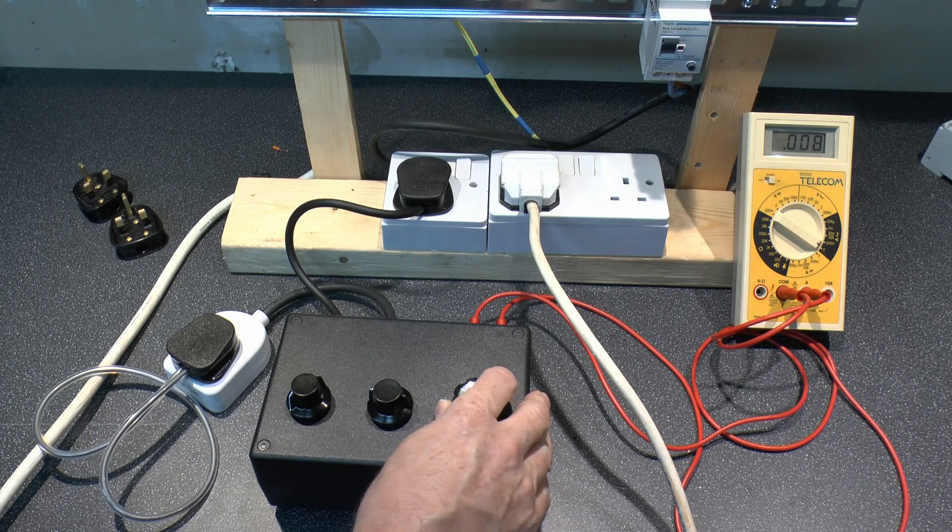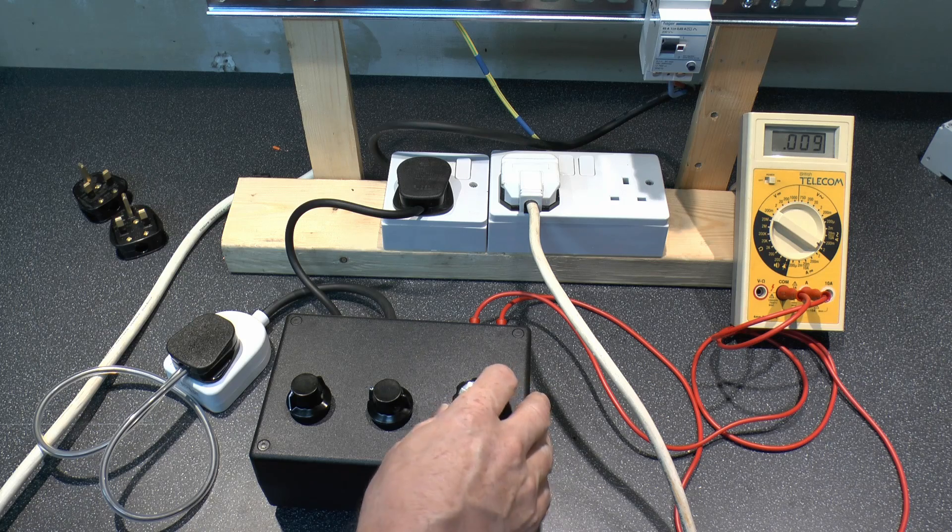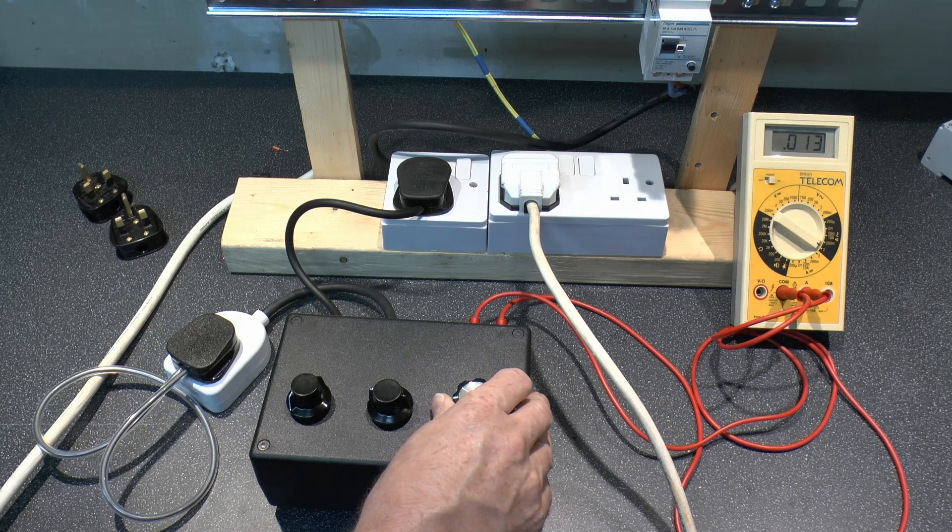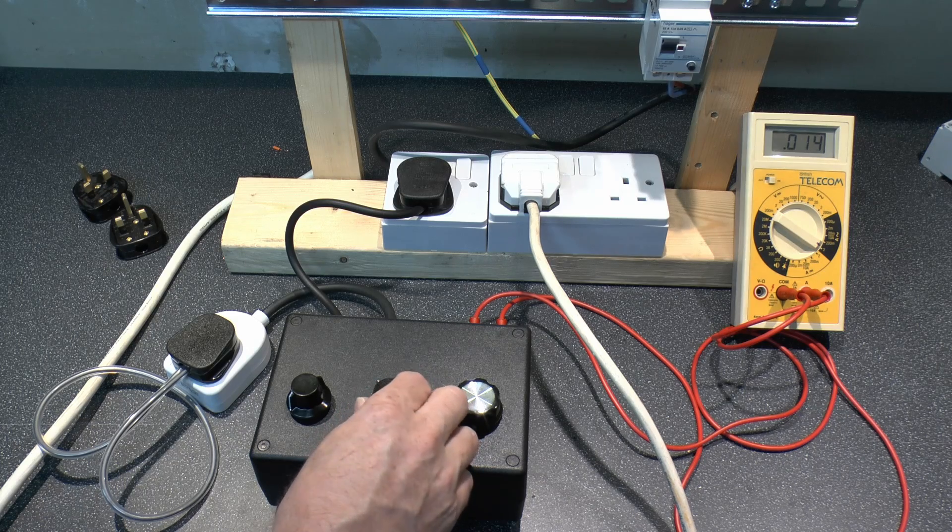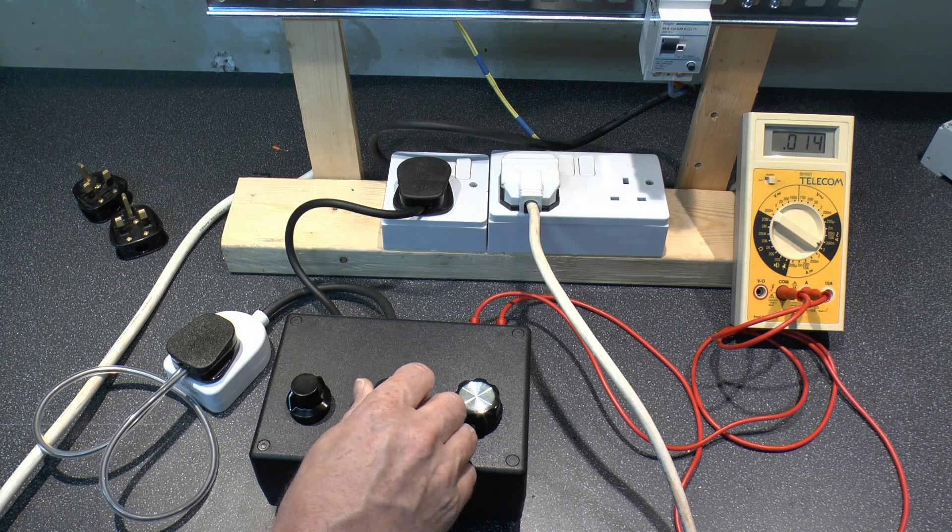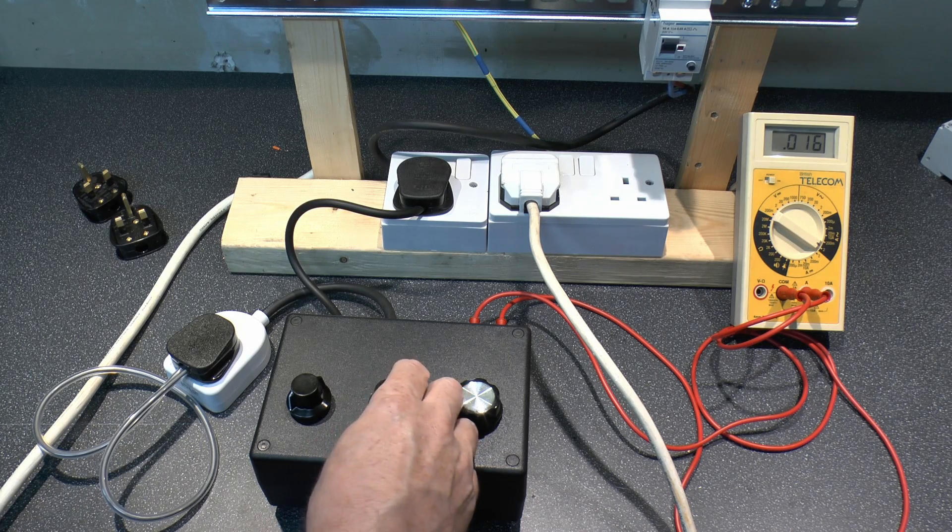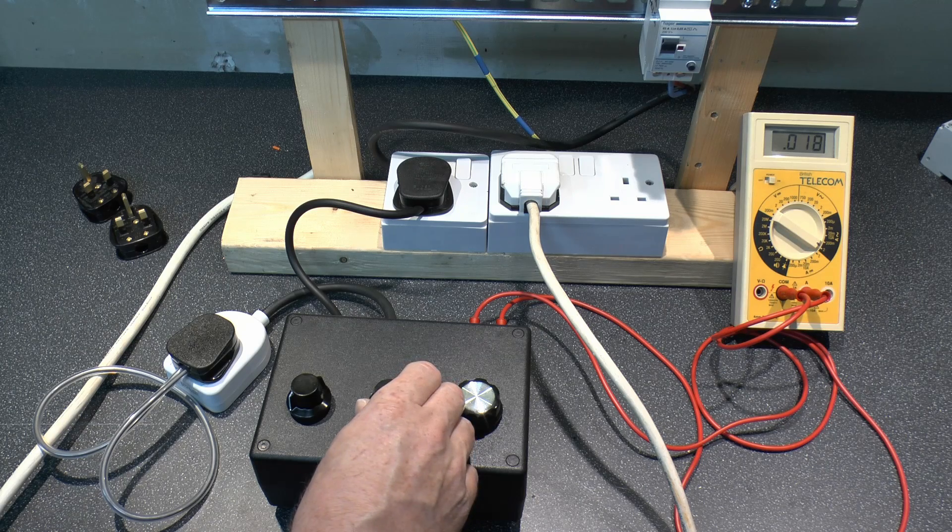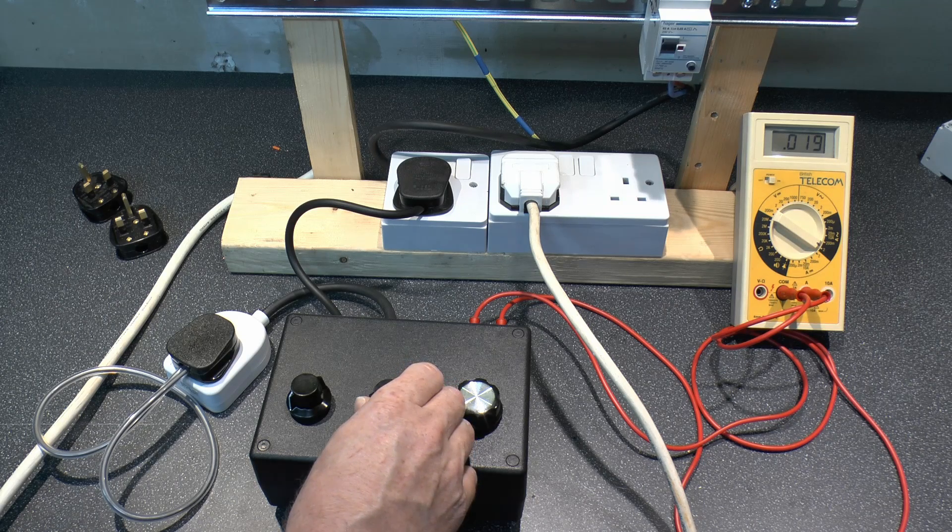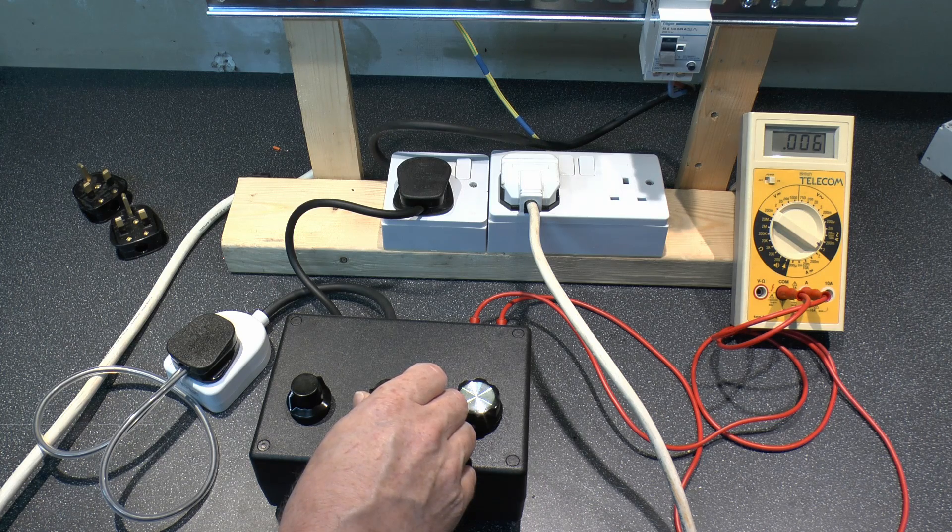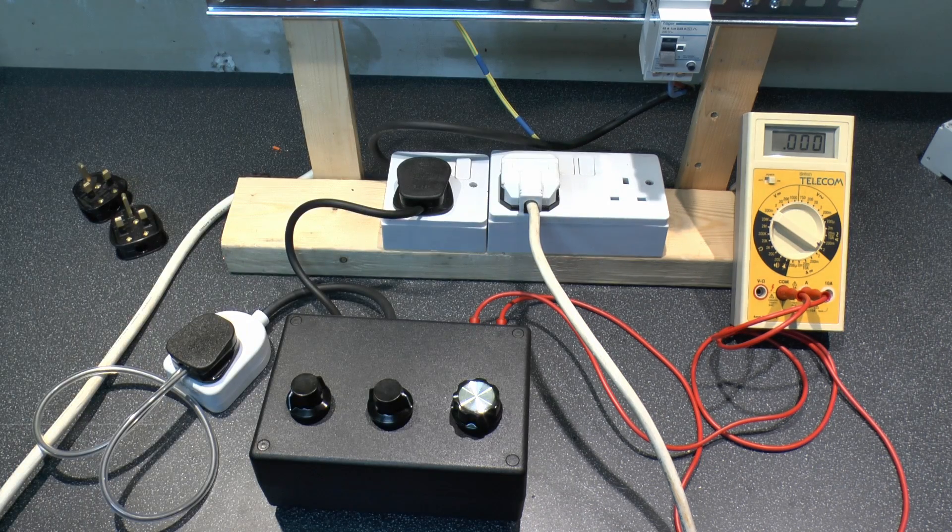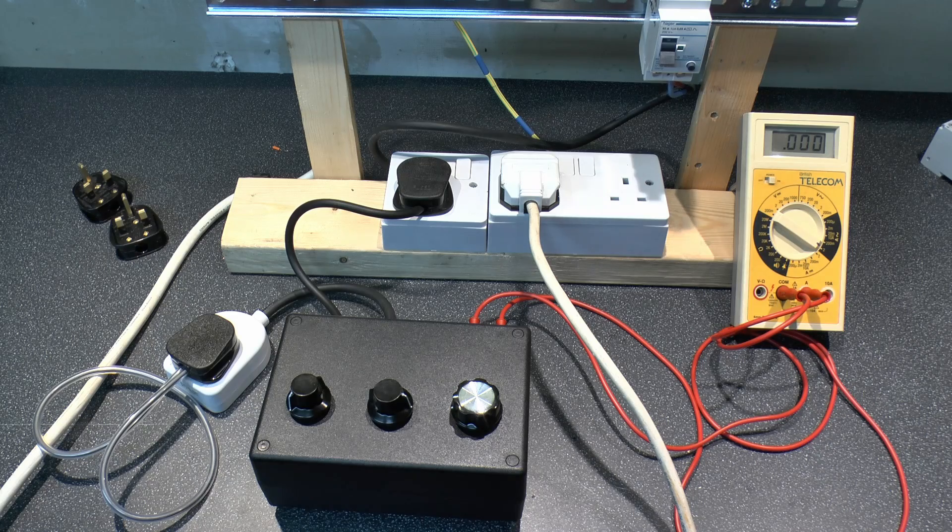So current increasing away there so 10, 11, 12, 13. I've gone to the second knob there. So 16, I believe it was about 21 so it should trip any moment. Okay so that was 21 again so again consistent with what we had previously.